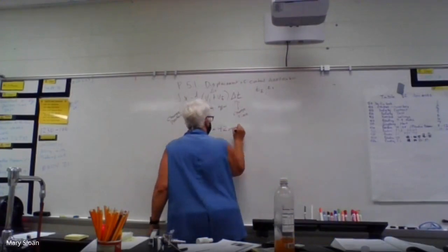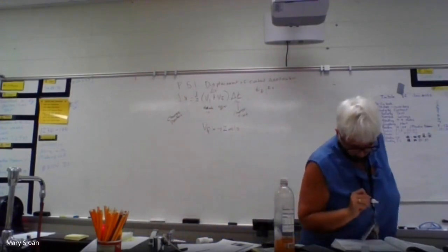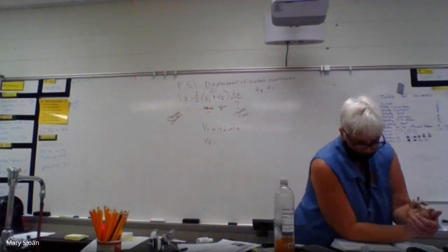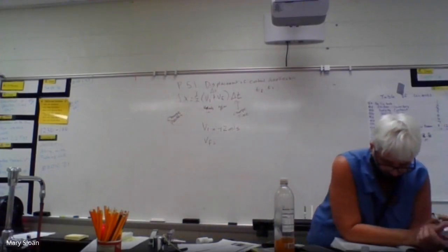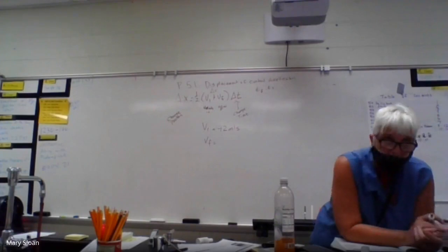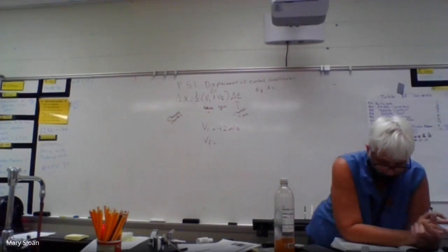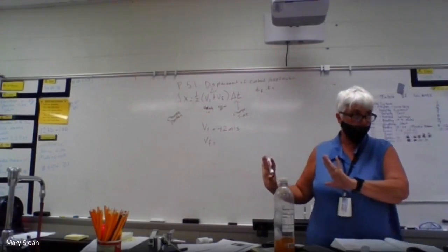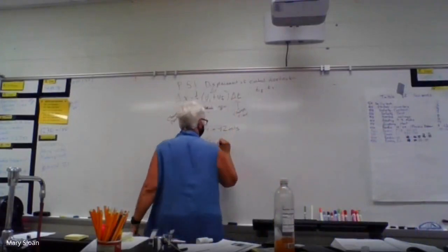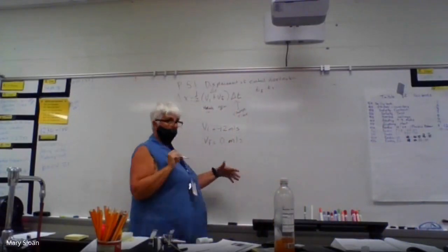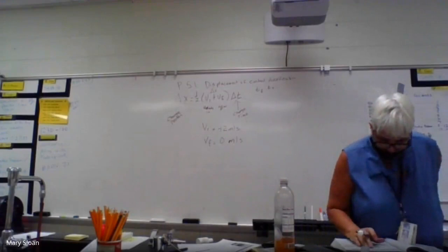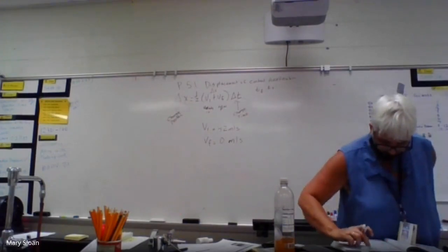The sample problem says a race car reaches a speed of 42 meters per second. It reaches that, so what does that mean? Does that have velocity initial or velocity final? That is my velocity final. They have that difference in the room.